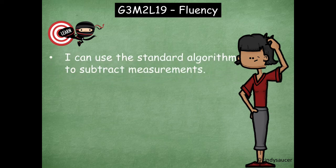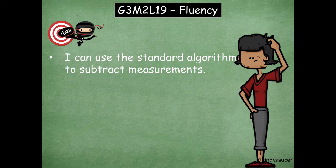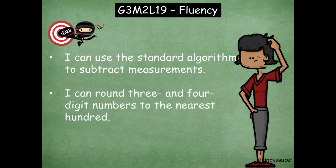Our first learning goal says I can use the standard algorithm to subtract measurements. We're going to continue from our previous lesson and work with subtraction with decomposing numbers once. And our other activity has to do with rounding. I can round three and four digit numbers to the nearest hundred. So that's going to be our main focus for rounding is to the hundreds place.